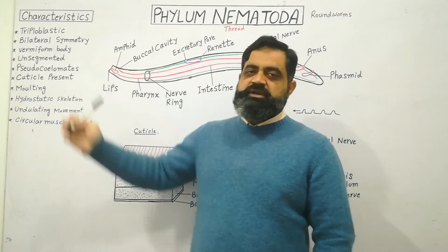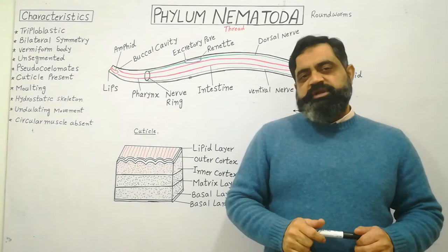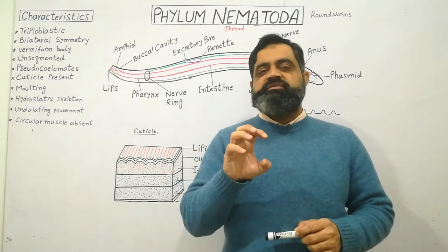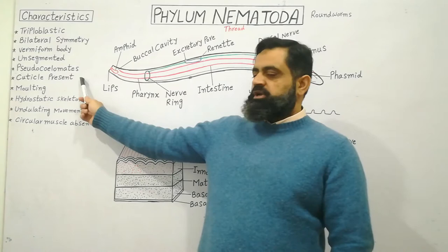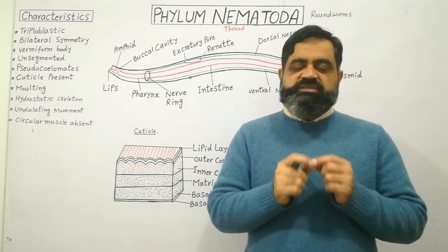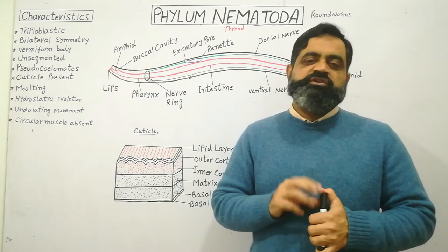These animals are also called pseudocoelomates. Pseudocoelomates are those animals which do not have a true body cavity or coelom. A cuticle is present — a protective layer around their epidermis, just like our nails, which helps protect the body from the digestive enzymes of the host where they thrive.